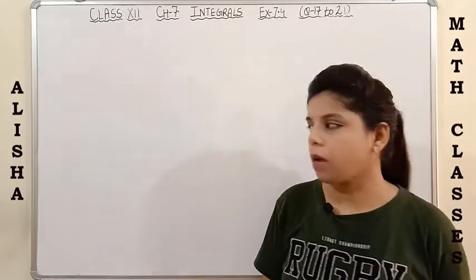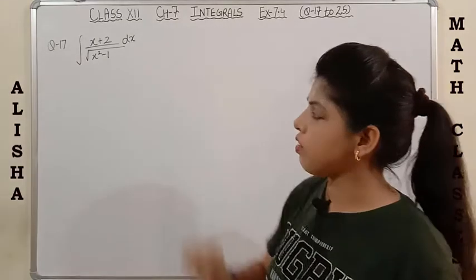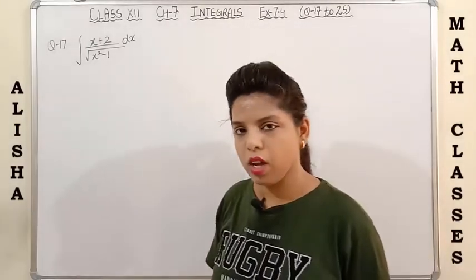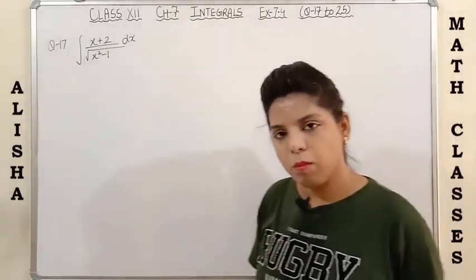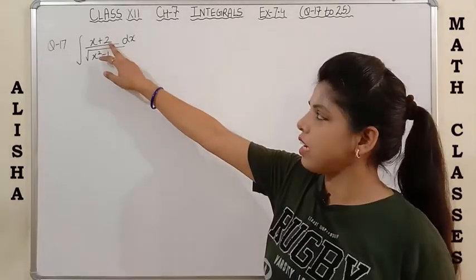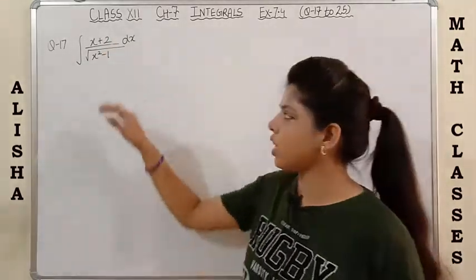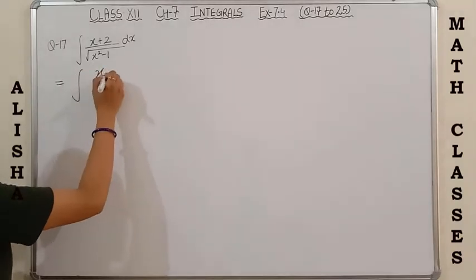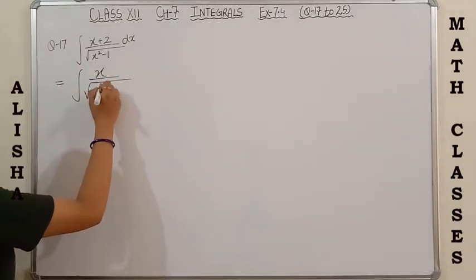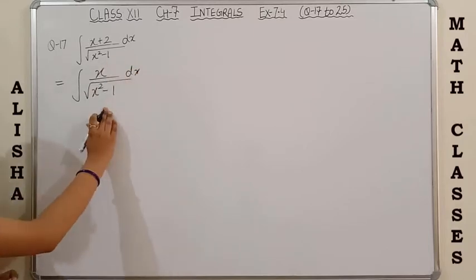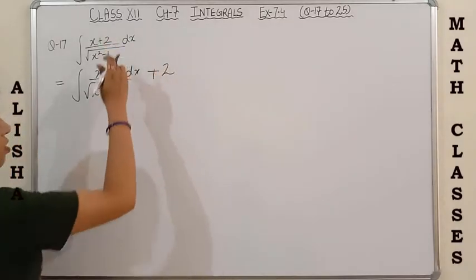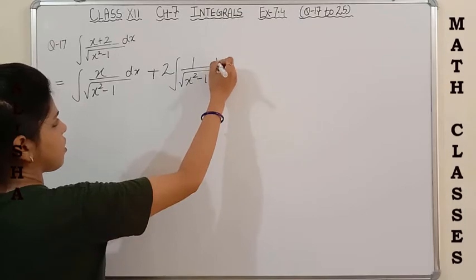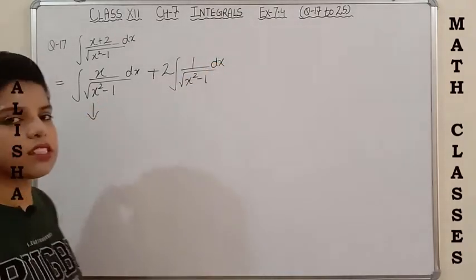Without wasting time, let's start. Question 17: we have to do the integration of (x+2) upon square root of (x²-1). We observe that we have a linear equation in the numerator and a quadratic equation in the denominator. We can separate the integral into two parts: x upon √(x²-1) dx, plus 2 — a constant taken outside — times 1 upon √(x²-1) dx.